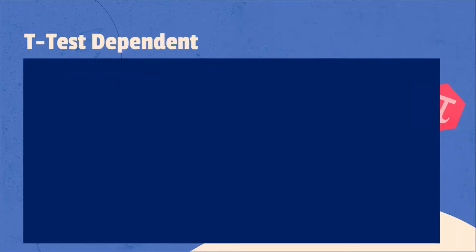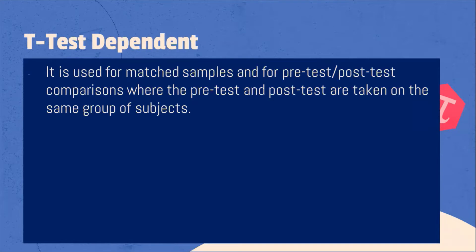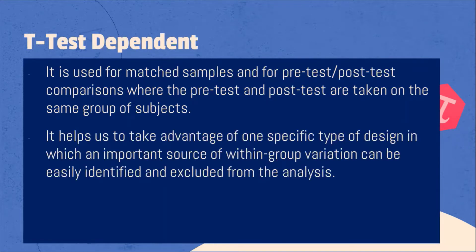When do we use t-test dependent? It is used for matched samples and for pre-test post-test comparisons where the pre-test and post-test are taken on the same group of subjects. It also helps us take advantage of a specific type of design in which an important source of within-group variation can be easily identified and excluded from the analysis.